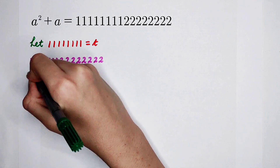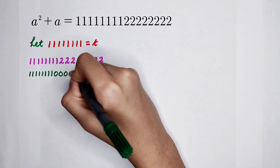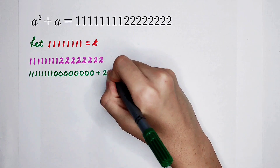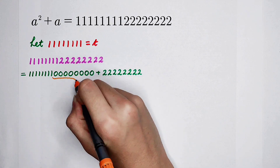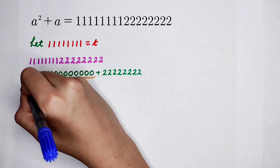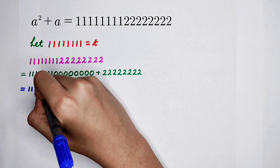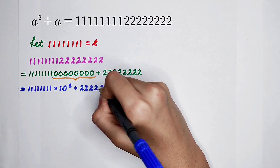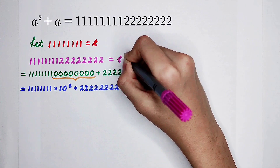It can be written as first a×1 and then a×0, and then plus a×2. These 8 zeros can be written as 10 to the power of 8. So this is 111111 times 10 to the power of 8, and then plus 222222222.